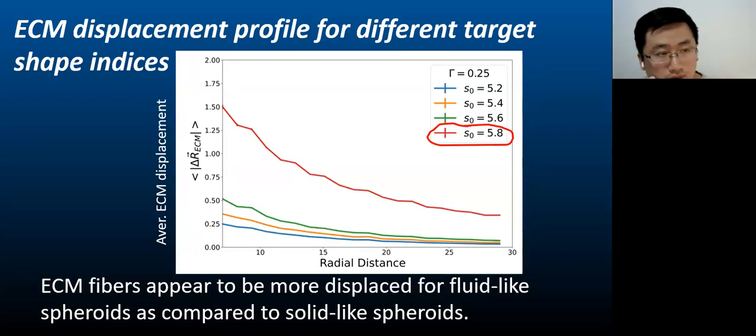Next we plot the ECM displacement profile to study how this activity interaction remodels the ECM networks. Here the plot is the average ECM displacement as a function of the radial distance to the center of the spheroid. We can see that the curve with the highest value of target shape index S naught equals 5.8, which corresponds to the fluid-like spheroids, behaves quite differently than the other curves.